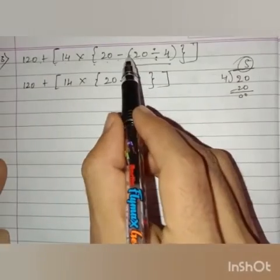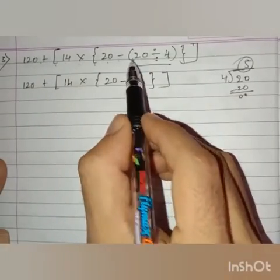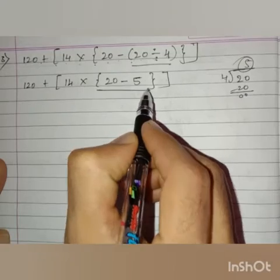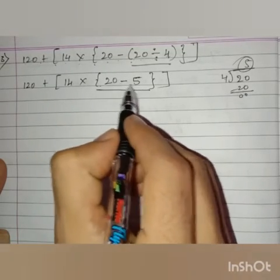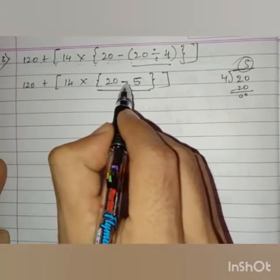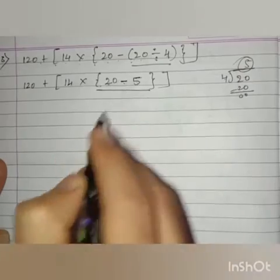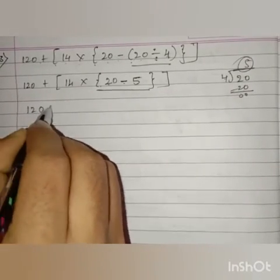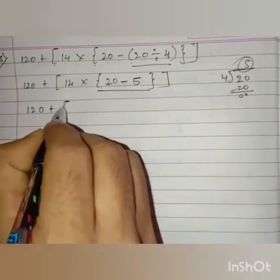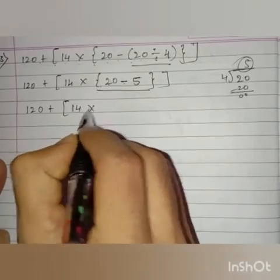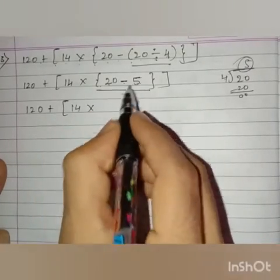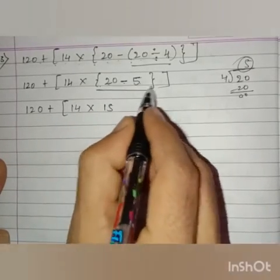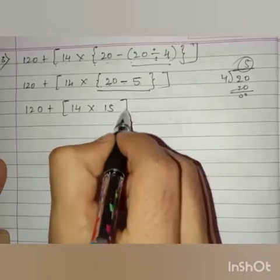After removing the common bracket, we have to remove the curly bracket. The operation in the curly bracket is subtraction. Remaining as it is: 120 plus 14 into — now 20 minus 5 is 15. Big bracket close.